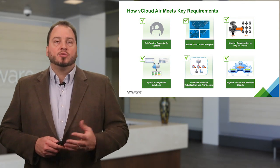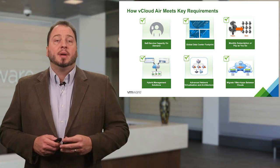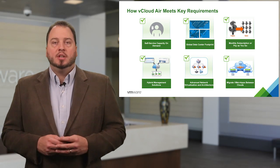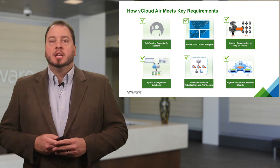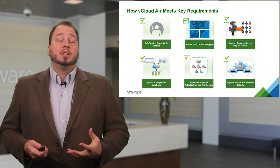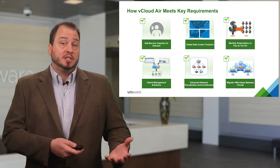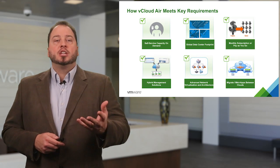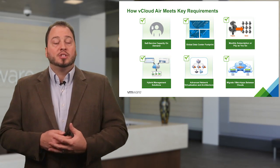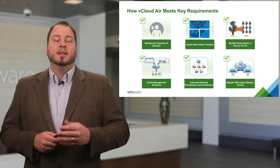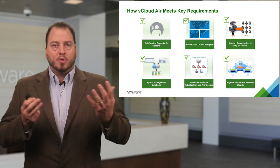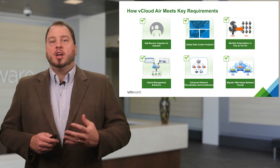vCloud Air is a fantastic choice for meeting these requirements. We provide self-service capacity on demand so you can move workloads when you need to and move them back when you need to. Our global data center footprint gives you the reach your applications need. Our monthly subscription or pay-as-you-go service supports a true hybrid cloud strategy or spinning up capacity for test/dev or upgrade scenarios. Hybrid management solutions like vRealize Automation and vRealize Application Services are true hybrid tools that allow you to build application architectures in either location, with advanced networking and virtualization features that are cross-platform.